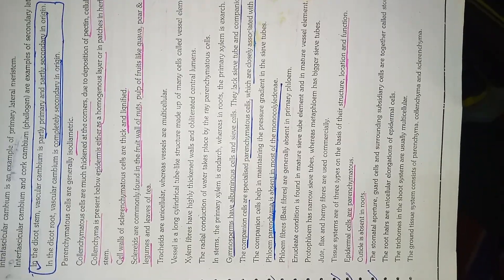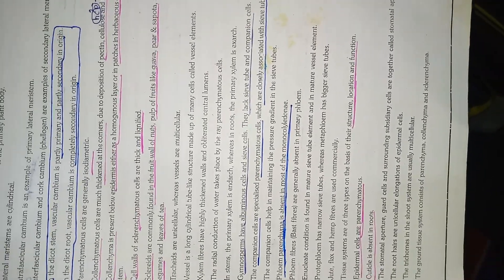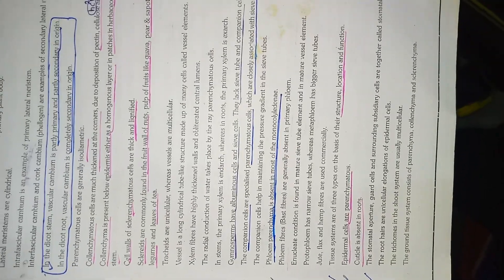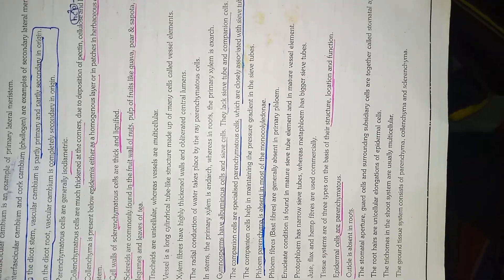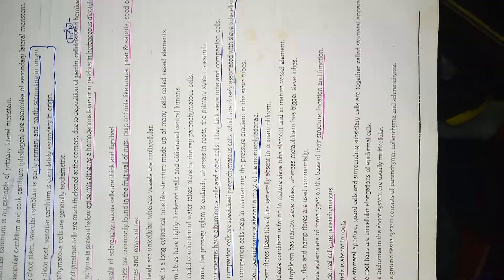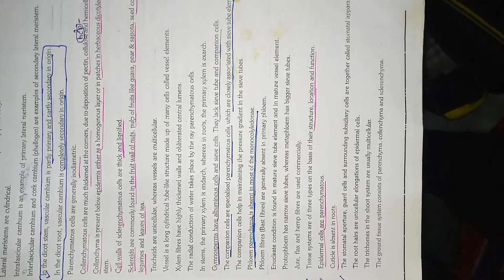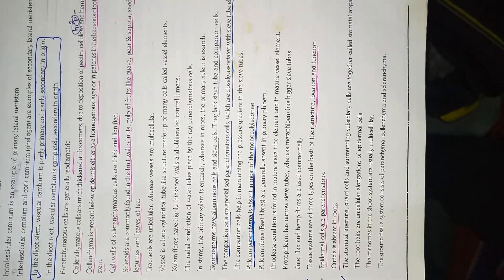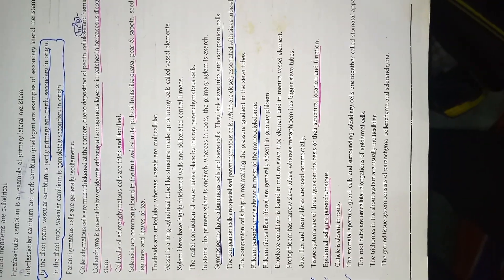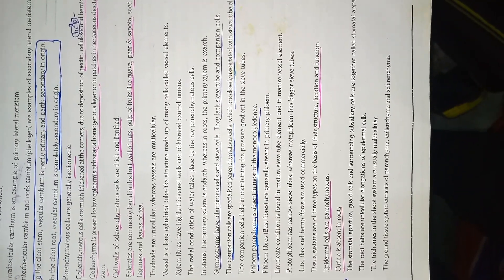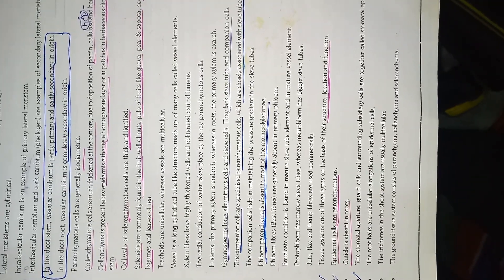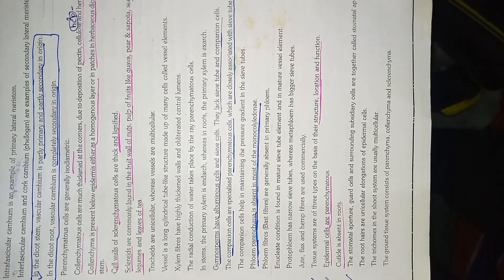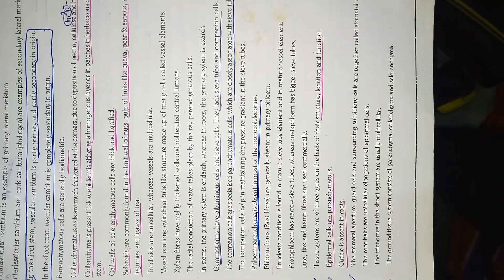Gymnosperms have albuminous cells and sieve cells; they lack sieve tubes and companion cells. Companion cells are special parenchymatous cells closely associated with the sieve tube elements. Phloem parenchyma is absent in most monocotyledons. Phloem fibers, i.e., bast fibers, are generally absent in primary phloem. Nuclei are absent in mature sieve tube elements and in mature vessel elements.